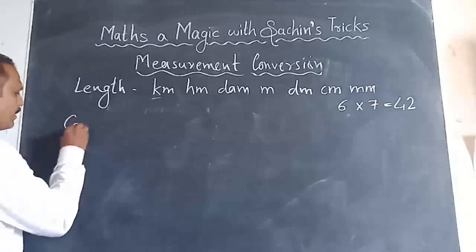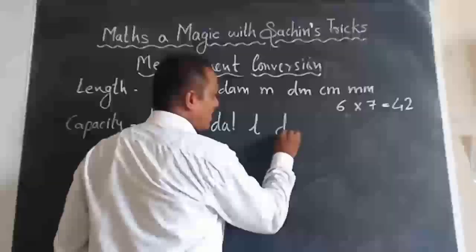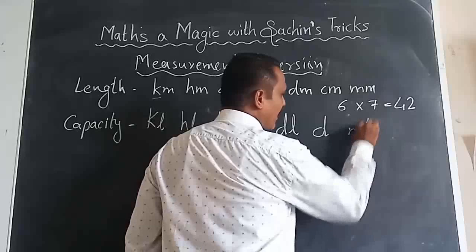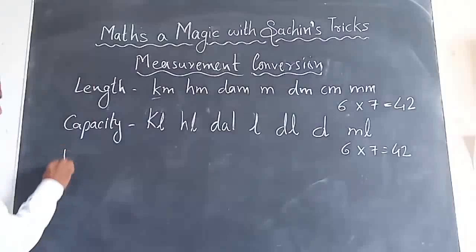Same for Capacity — we have kiloliter, hectoliter, decaliter, liter, deciliter, centiliter, and milliliter. That is also seven units, and six into seven is 42 conversions.